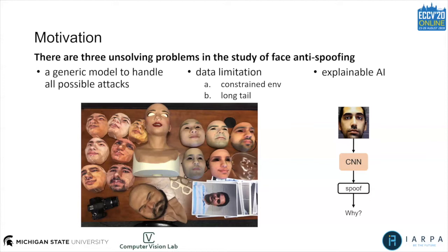Second, we need a proper way to mitigate the issue of limited anti-spoofing data. Most face anti-spoofing databases are collected in a constrained environment, and environment variation and subject variation are very limited compared to other face task databases, such as face recognition and face alignment. In addition, some specific types such as impersonation makeup and silicon mask are very scarce and hard to find, with only a few samples in the databases.